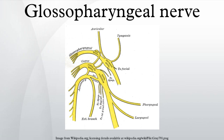And the serous glands of the mouth. Branches: tympanic, stylopharyngeal, tonsillar, nerve to carotid sinus, branches to the posterior third of tongue, lingual branches, and a communicating branch to the vagus nerve.